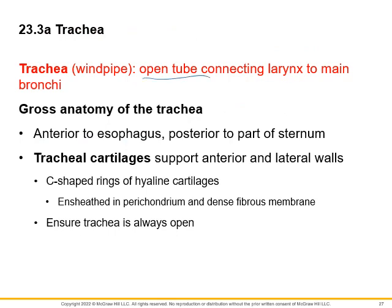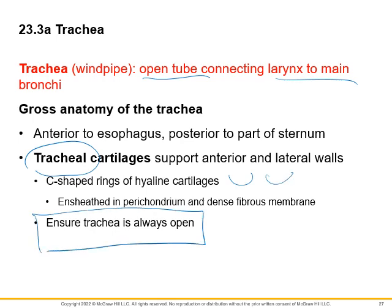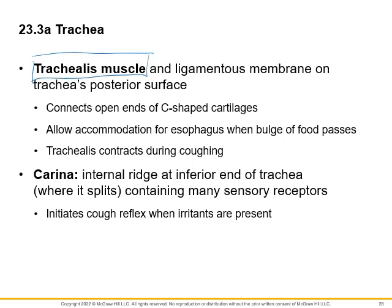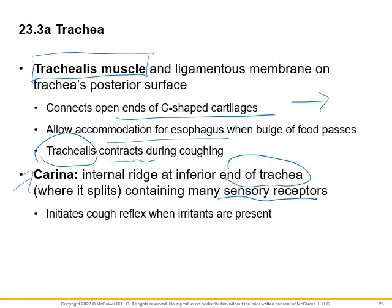The trachea, or windpipe, is an open tube connecting the larynx to the main bronchi. You'll see lots of tracheal cartilage — the C-shaped rings. The trachea needs to always be open because we always need oxygen for cellular respiration and ATP production. The trachealis muscle connects the open ends of the C-shaped cartilage, allowing food to push into that open space when swallowing. If you push the trachealis muscle to its limit and limit the amount of air that can move through the trachea, that's the choking hazard. There's also the carina at the end of the trachea, with lots of sensory receptors — if anything touches this structure, it initiates a violent cough reflex.